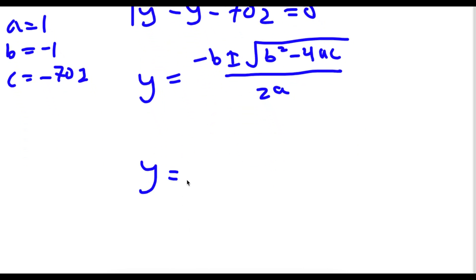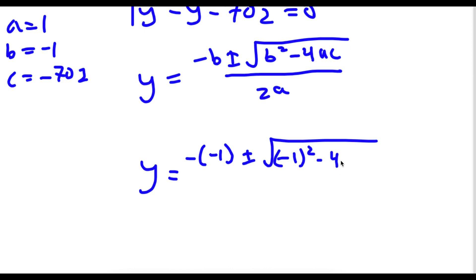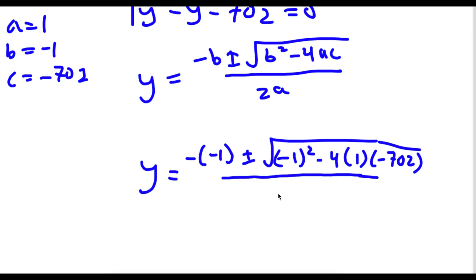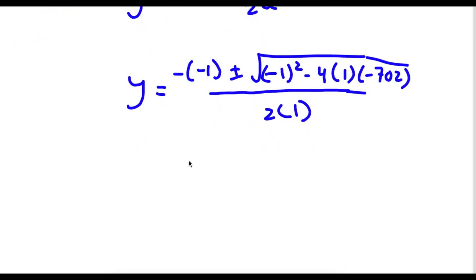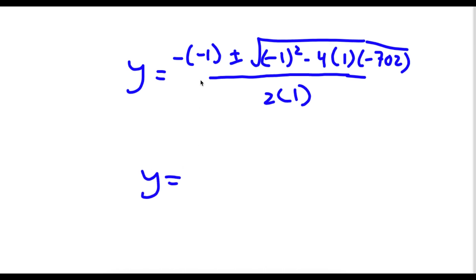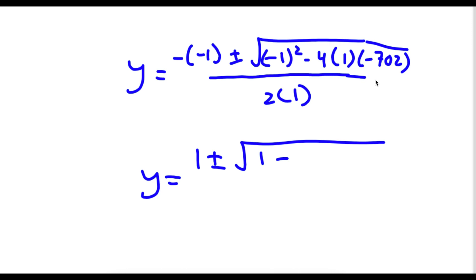So now I have negative b, so negative of negative 1, plus or minus the square root of b squared — so negative 1 squared — minus 4 times a, which is 1, times c, which is negative 702. I have this over 2a, so 2 times 1. Negative of a negative is positive, so I have positive 1 plus or minus the square root of 1 minus negative 4 times 702 over 2, which is positive 2,808. And 2 times 1 is 2.